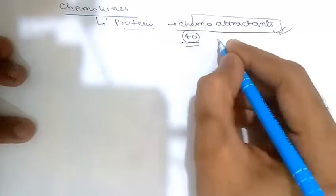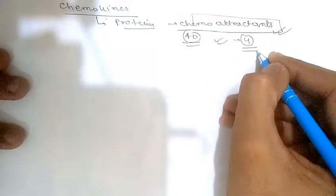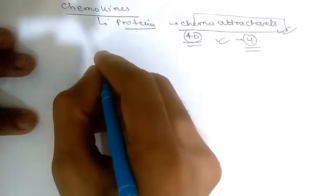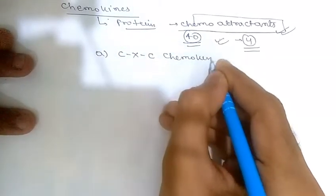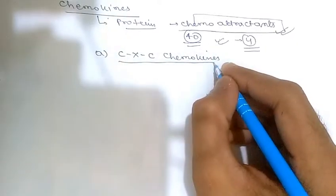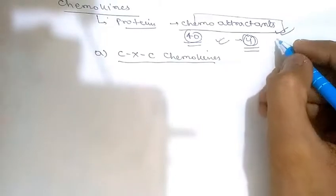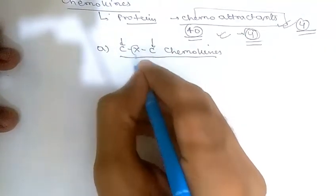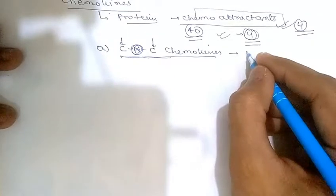Chemokines are classified into four major groups according to the arrangement of cysteine residues in the proteins. The first group is CXC chemokines, which have one amino acid residue separating the first two of the four conserved cysteine residues.